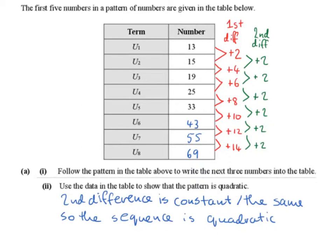So if we're at 33 and we added on 8 the last time, we add on 10 to get to 43, then add on 12 to get to 55, and add on 14 to get to 69. Since the second difference is constant — the same number each time — the sequence is quadratic.